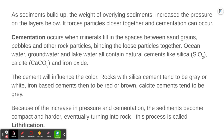Cementation — just like cement — occurs when minerals fill in the spaces between grains of sand, gravel, silt, or clay. This cementation process binds and holds together loose particles like a glue. The minerals involved in making the cement are found naturally in ocean water, groundwater, or lake water. They can be minerals like silica (SiO2, like quartz), calcite (calcium carbonate or calcium magnesium carbonate), or iron oxide.